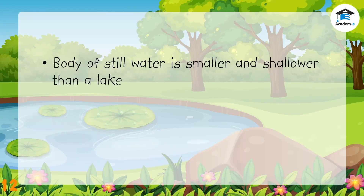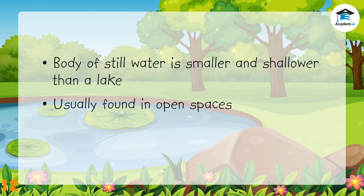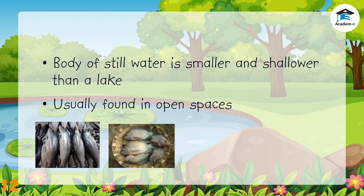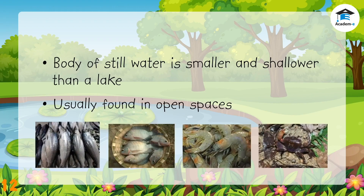This body of still water is smaller and shallower than a lake. It is usually found in open spaces. Some are natural; others are built by people to raise fish and other aquatic animals like bangus, tilapia, prawns, and crabs. What waterform is this? Right, it is a pond.